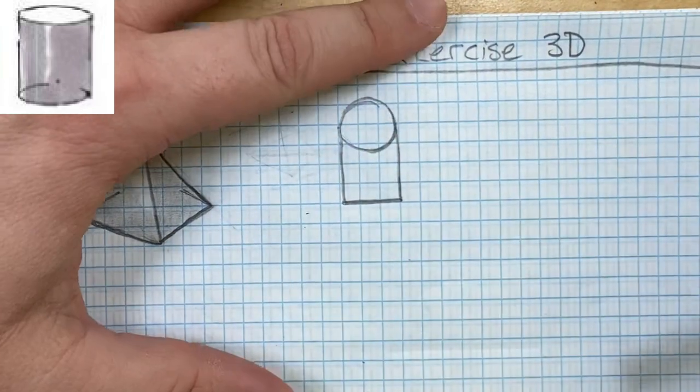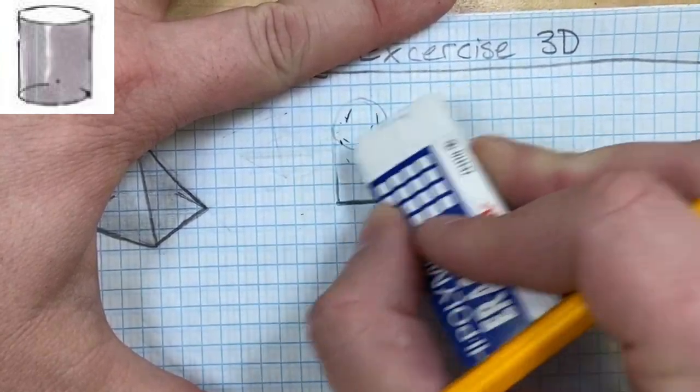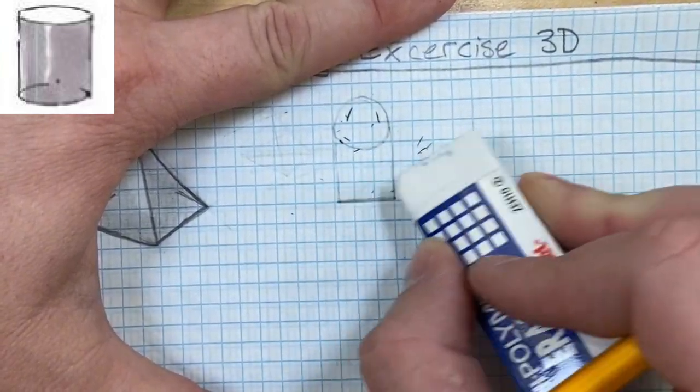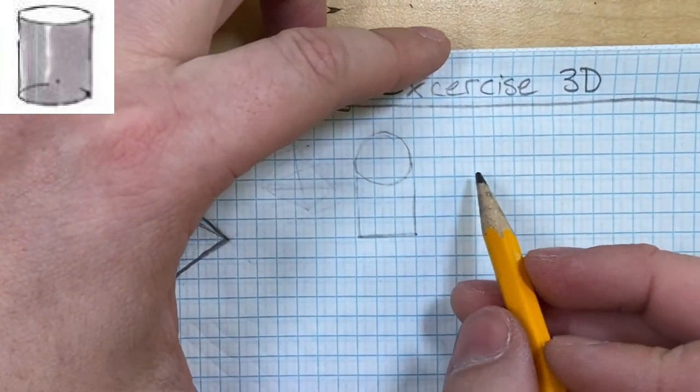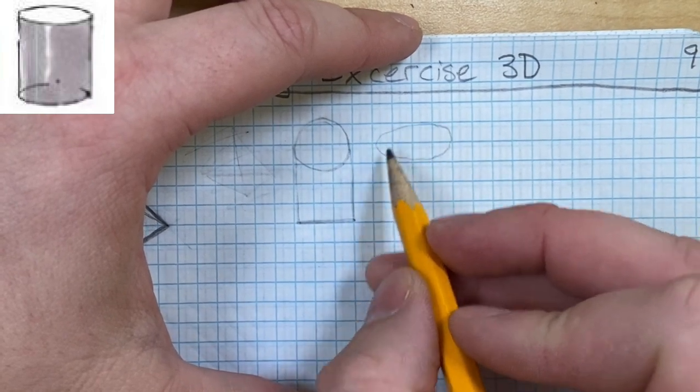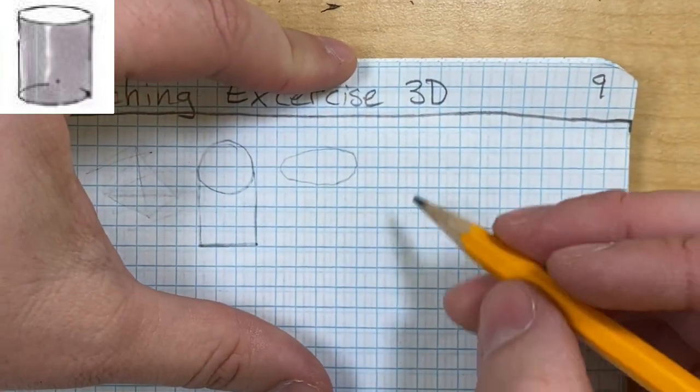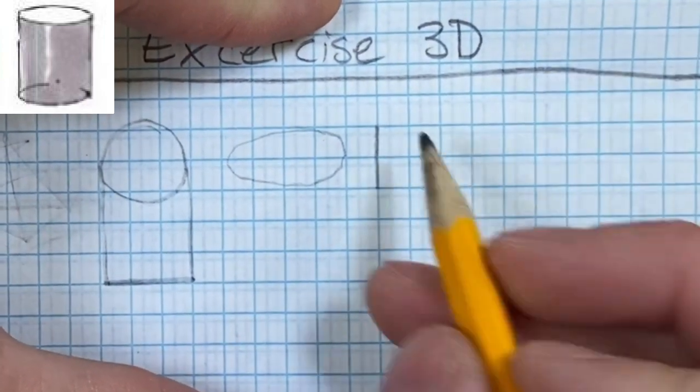When you draw this, which I'll erase now because that's not what it's going to look like, you're going to first draw an oval. Now you can freehand an oval if you'd like, or you can kind of use the box method like I showed you with the 2D circles.